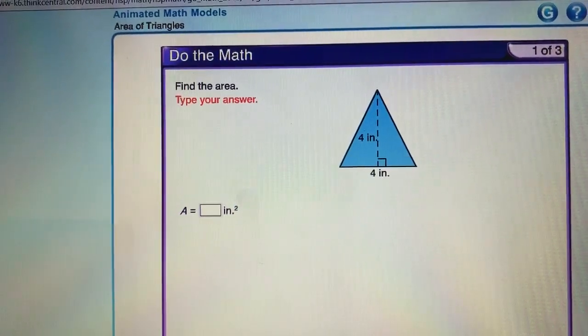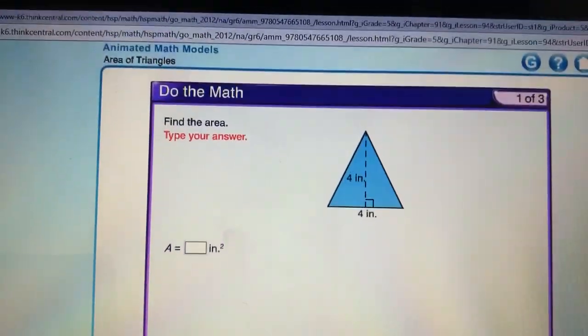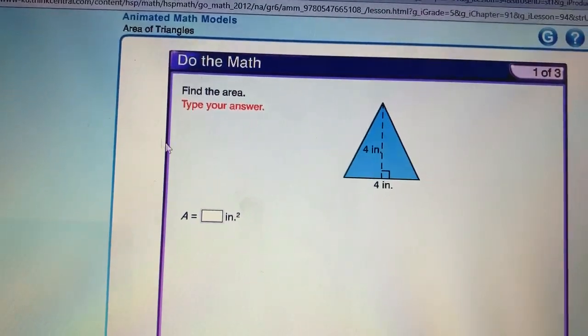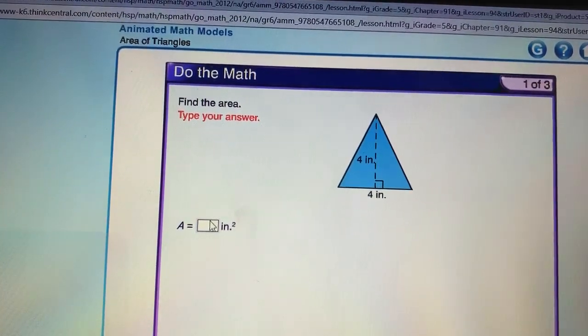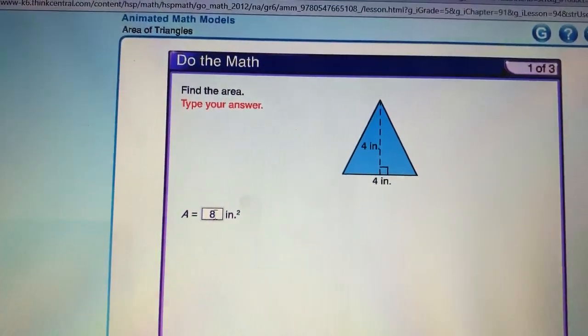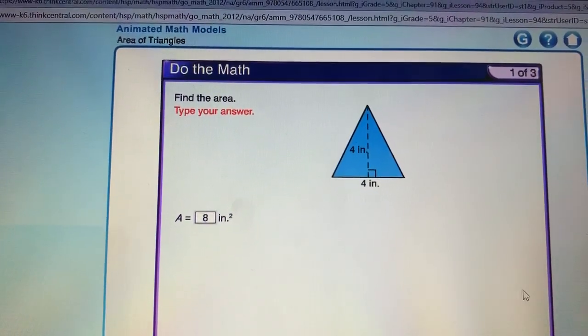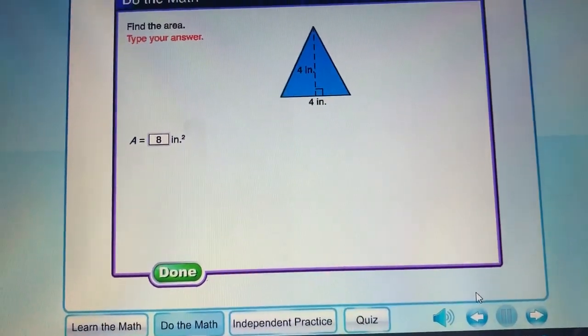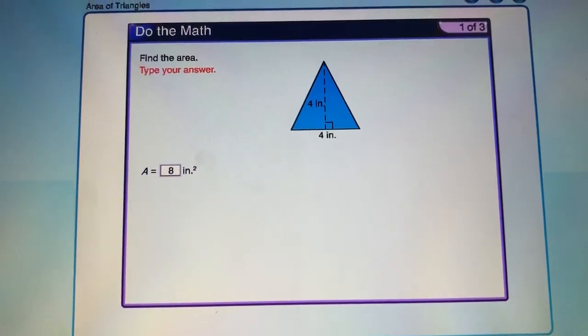So in this case, your answer is going to be 4 times 4, which is 16 divided by 2, and that makes 8 inches squared. And when you're looking for area, don't forget, it's always inches squared, okay? And here we go.